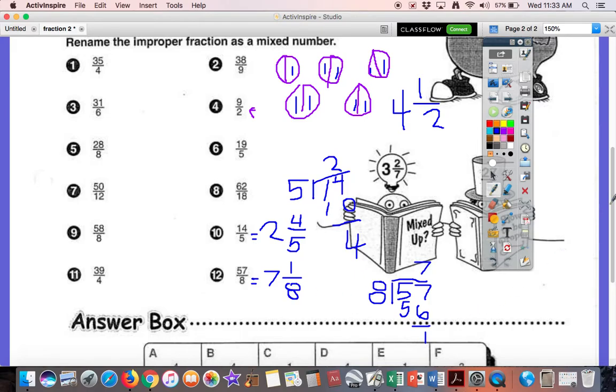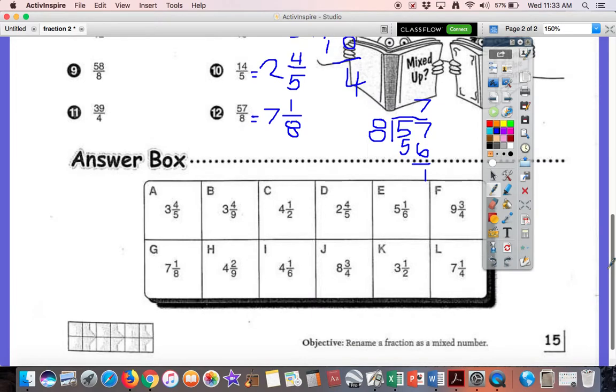Now, you should check and find those down here. 1, 7 and 1 8ths. There it is. So, that's G. 12 is used. G is used. And 10 is 2 and 4 fifths. 2 and 4 fifths. Right there. That's used. So, check your work as you go.